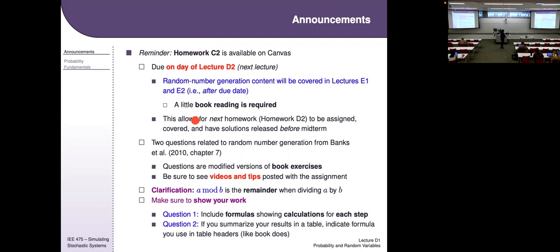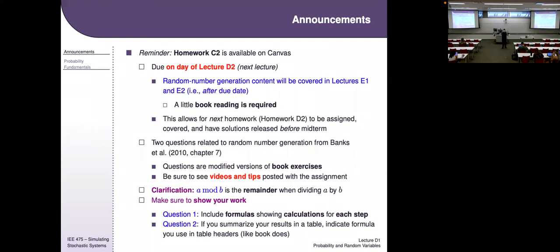Homework C2 has just two questions on random number generation. Part one is random number generation — it's pretty much a plug-and-chug formula. Part two gives you a bunch of random numbers and you run a Kolmogorov-Smirnov test, which is a bit like a chi-squared test to see if they're appropriately random. For question one, make sure you include formulations; it's okay to give one formula and show how you're plugging things in.